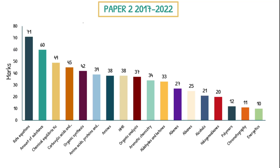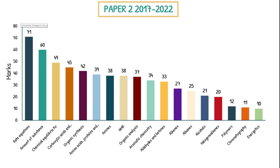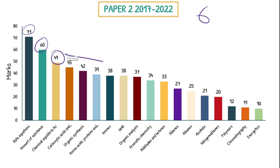So this is a graph showing the paper 2 results from 2017 to 2022, excluding 2023. At the bottom on the x-axis we have every topic that can come up, and on the y-axis we have all the marks allocated across the six papers. As we can see, rate equations has 71 marks across the years, amount of substance had 60, chemical equilibrium KC had 49, and so on. I've excluded anything lower than 10 marks for the sake of this video.